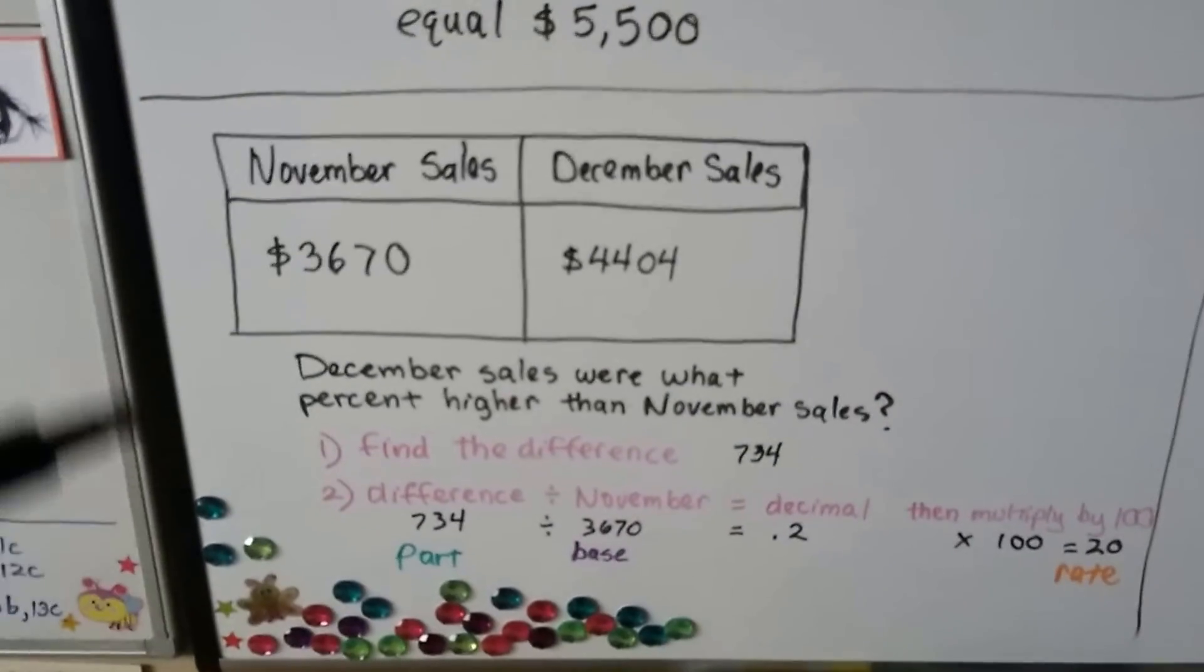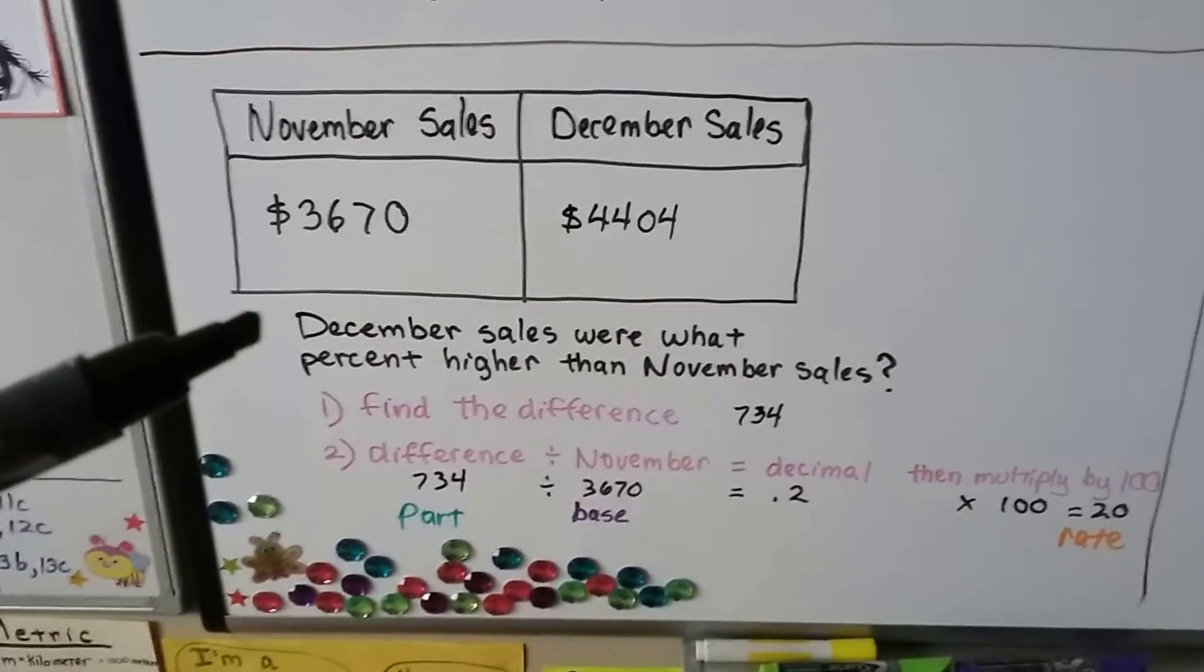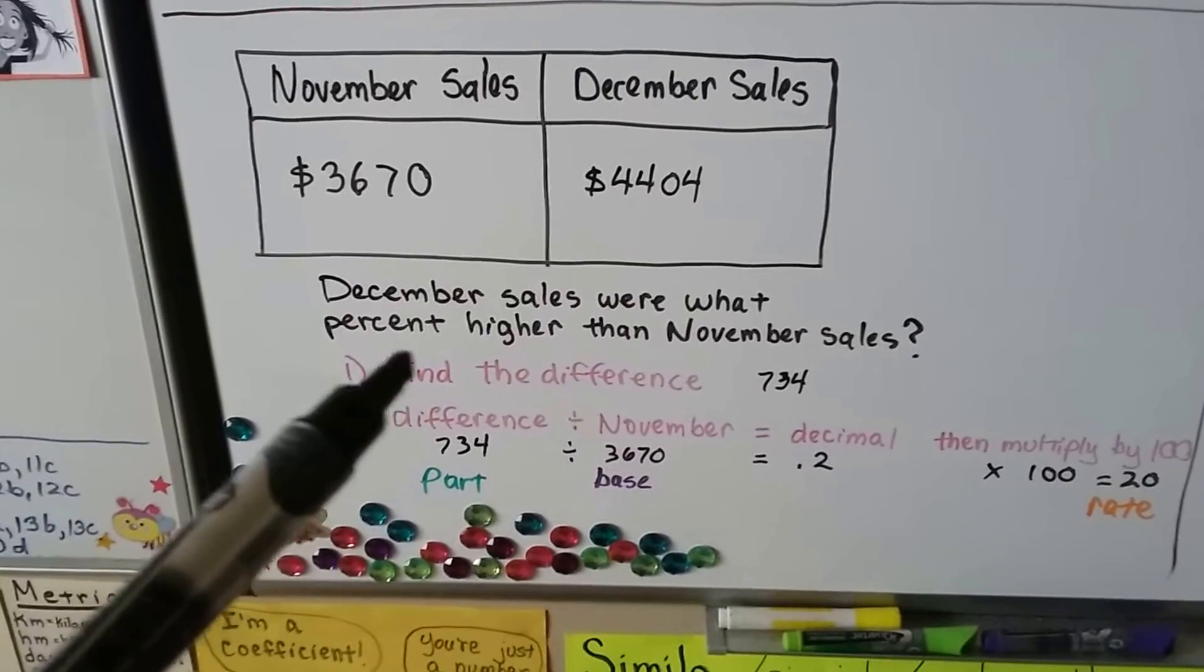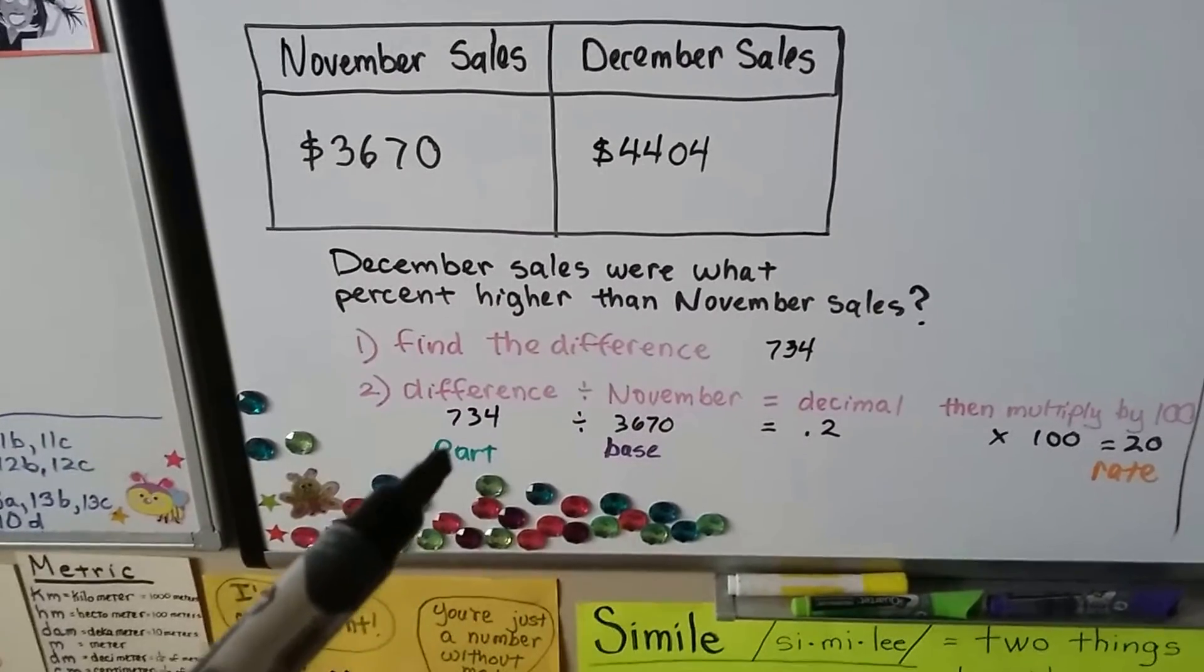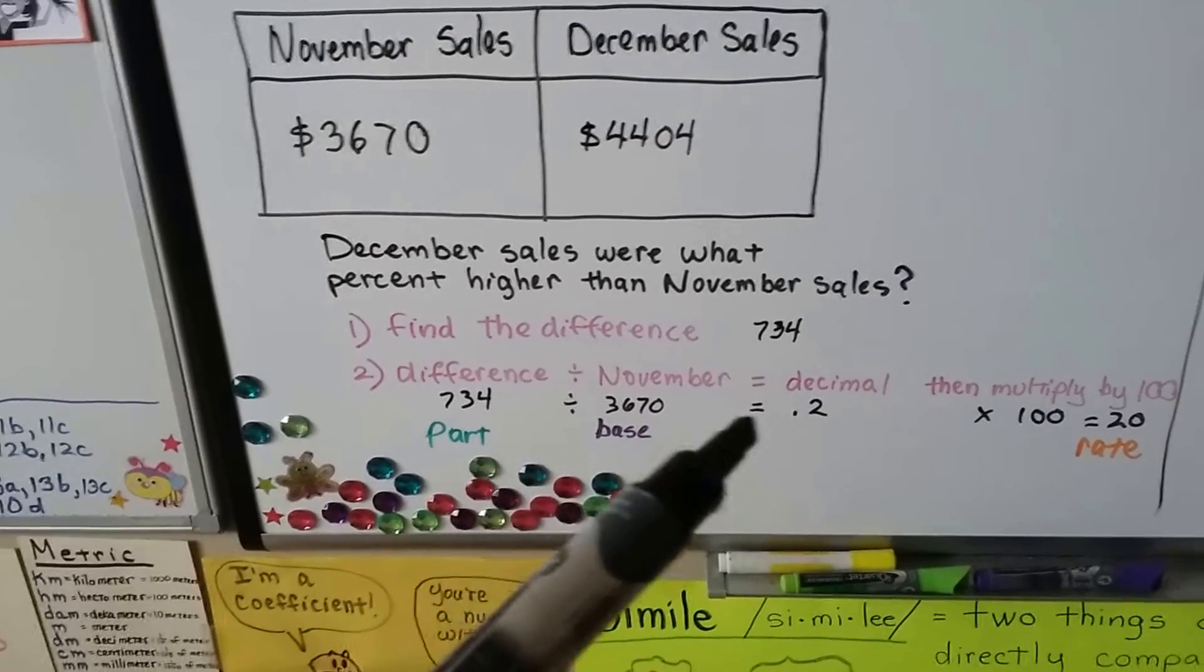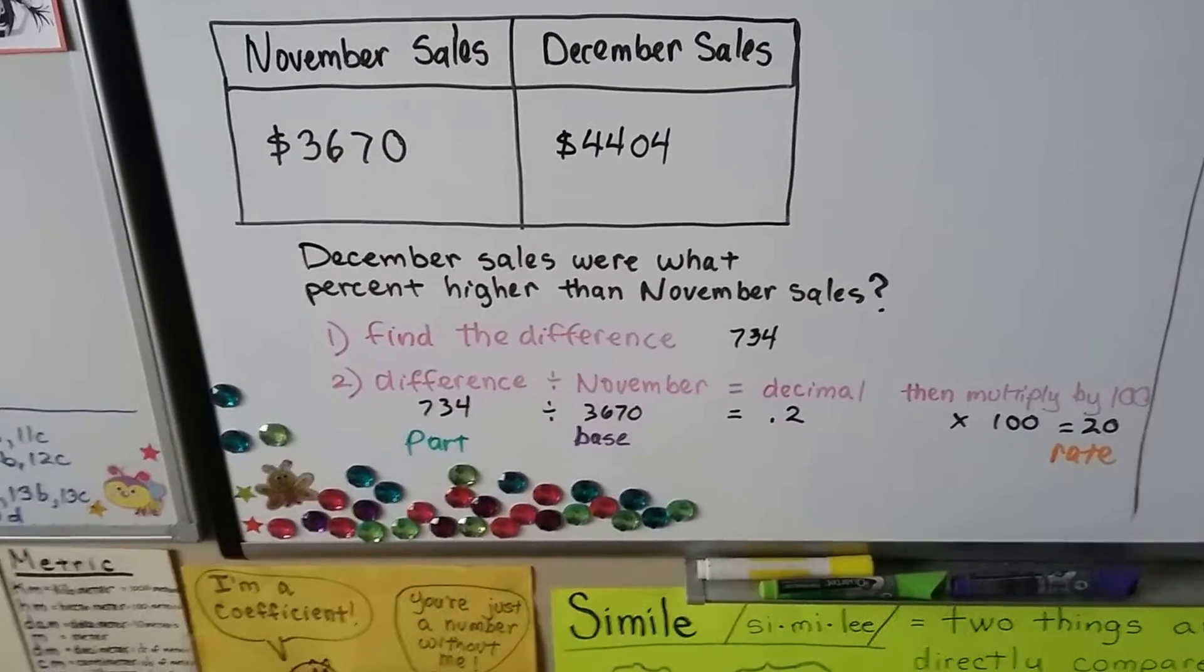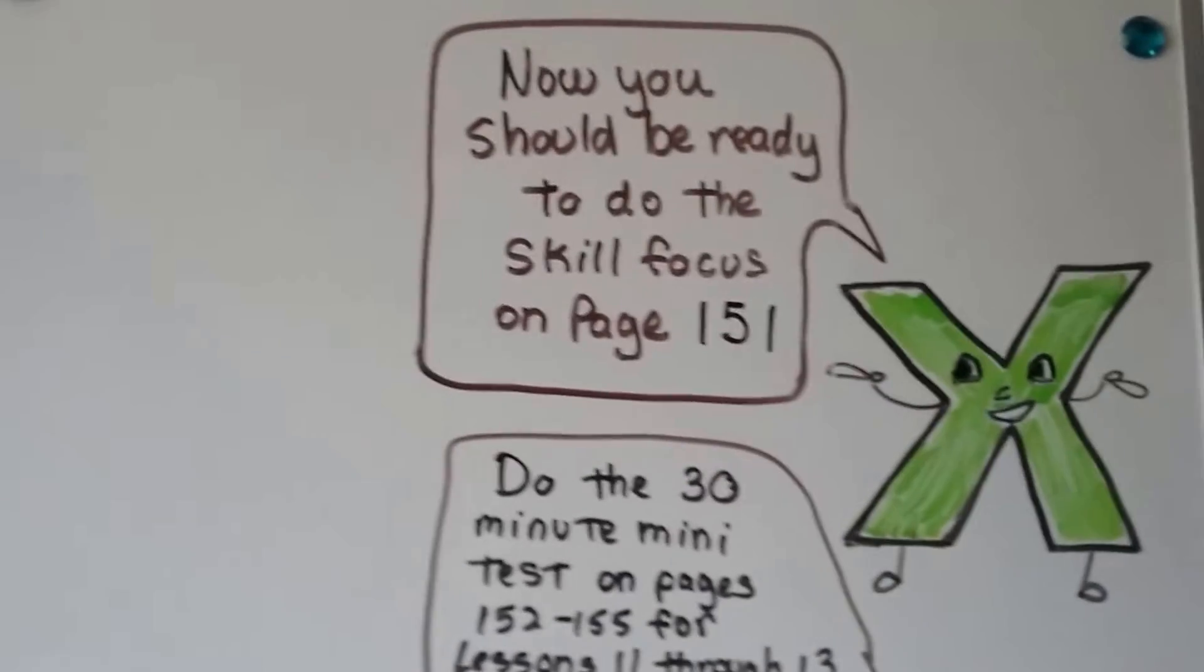And when you have a chart, and it says something like November sales were $3,670, and December sales were $4,404, and it says December sales were what percent higher than November sales? Well, they want to know what percent higher this is than this. And the first thing we need to do is find the difference. So we do 4,404 minus 3,670, and we get 734. Now, we've got the part, we've got the base, we need the rate. We do 734 divided by 3,670, and it's going to equal .2. And we know that we can multiply that by 100 to get 20 for 20%, or we can just turn this decimal into .20, which is 20%. So be very, very careful when you're doing these. Just read the questions very carefully and remember the rules in the triangle.